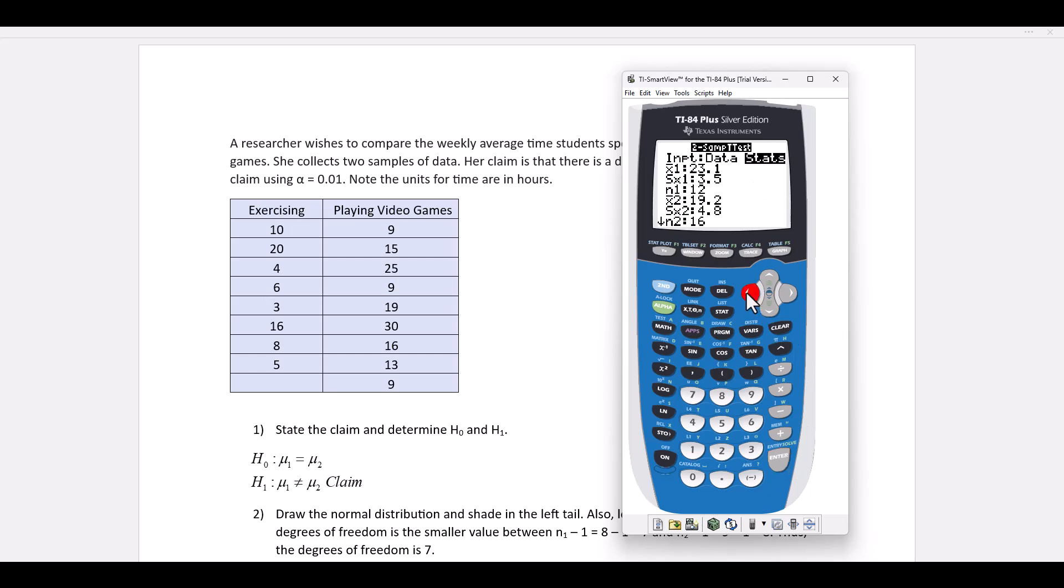We have to select data since we want to utilize the data we entered in L1 and L2. We look at our first list, make sure it has L1. The second list has L2. We select not equal to, for pooled, we select no,